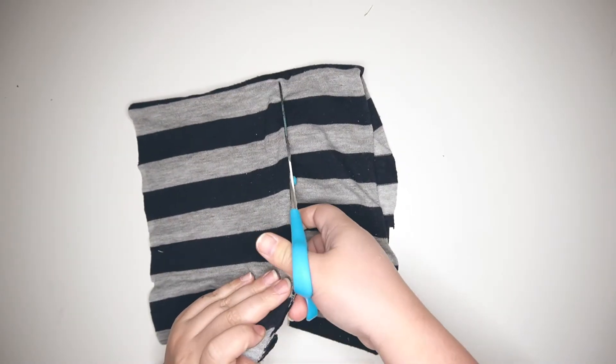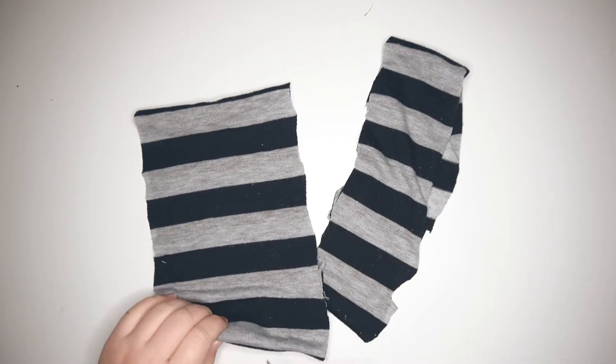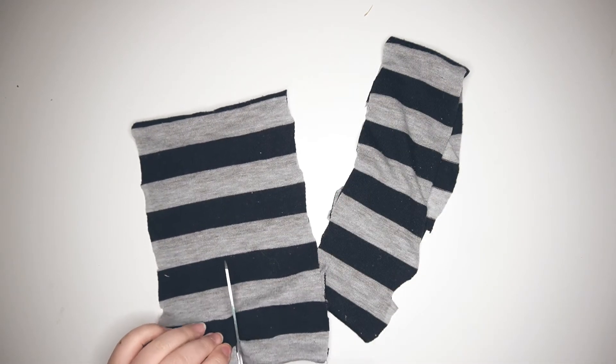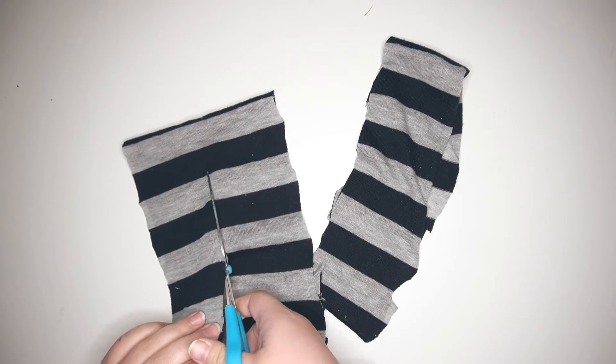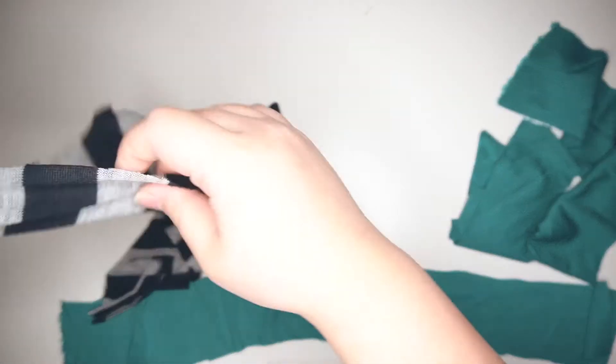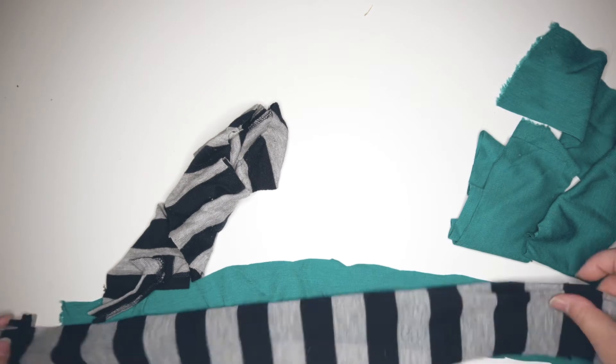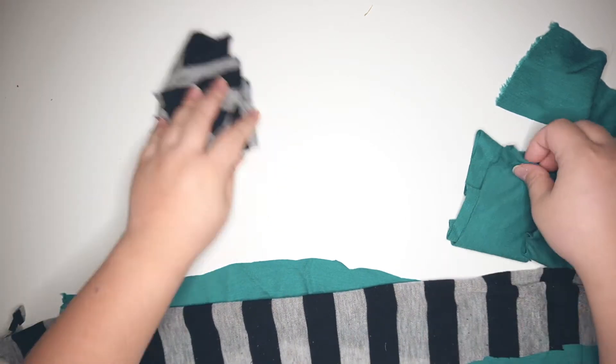Start off by cutting the fabric or t-shirt into long strips. You'll need three strips for each toy, so since I'm going to be making two toys, I'm cutting three strips of the turquoise fabric as well as three strips of the striped t-shirt. Then I'm separating them into two groups of three strands each.